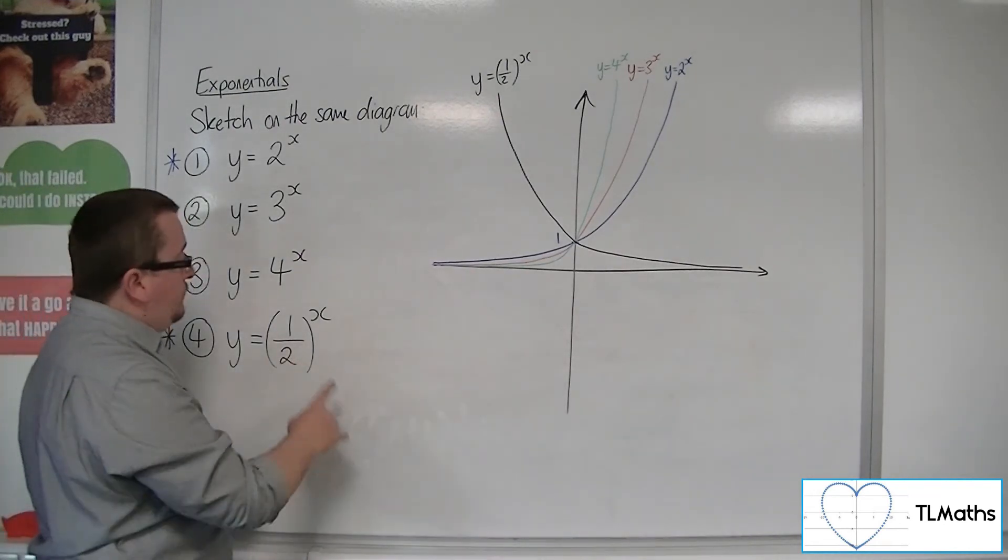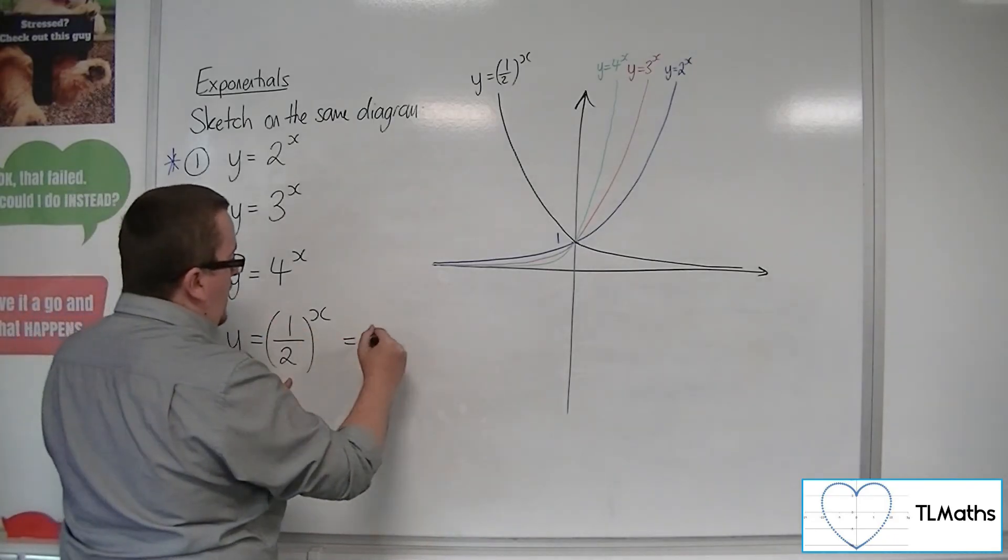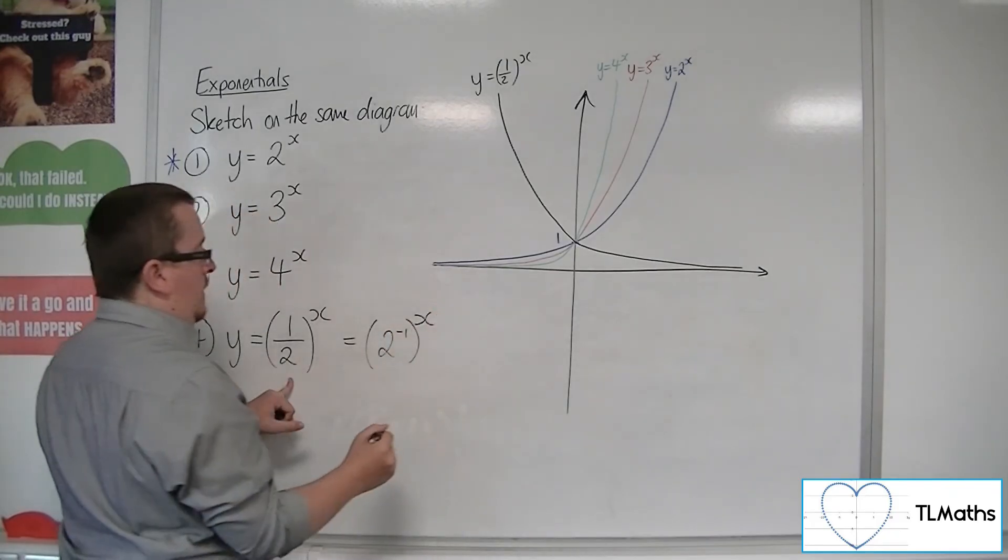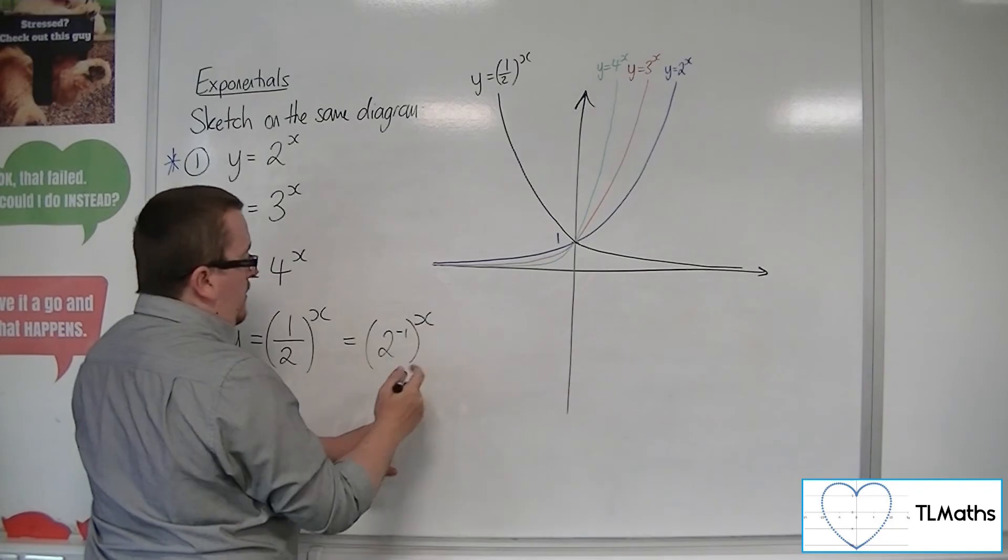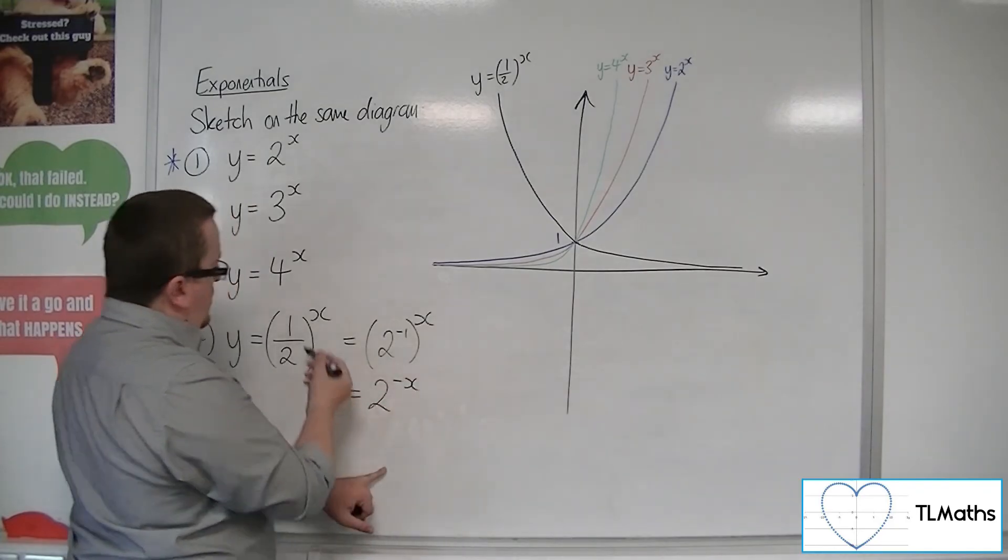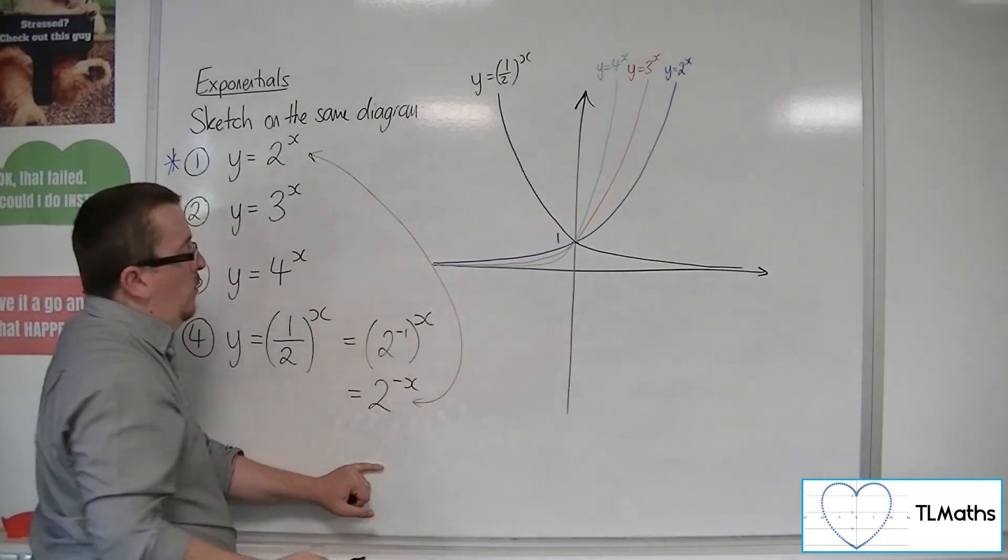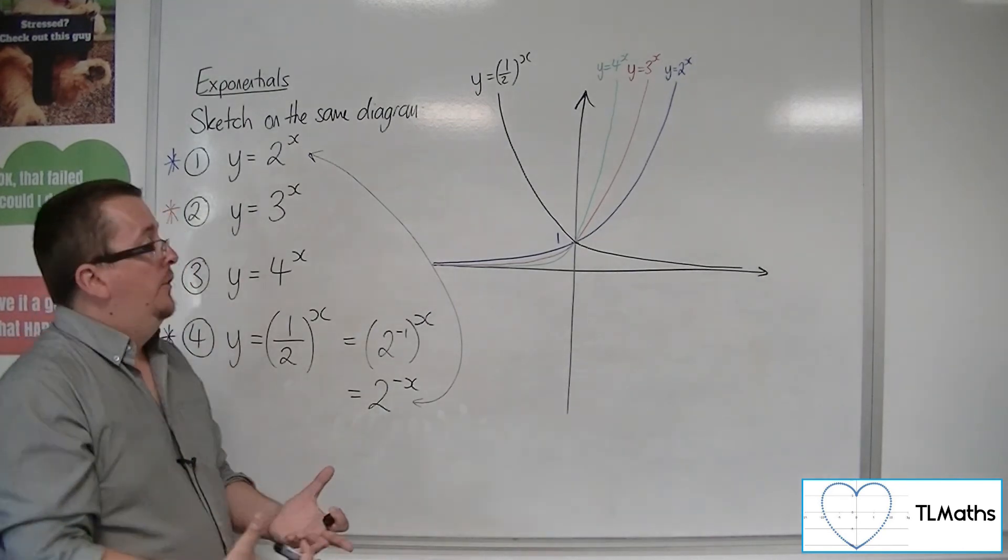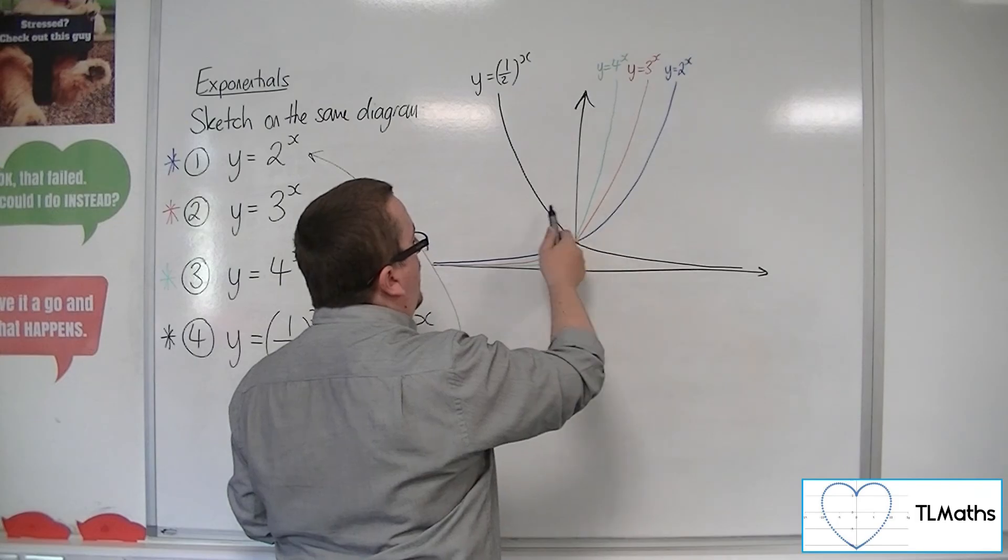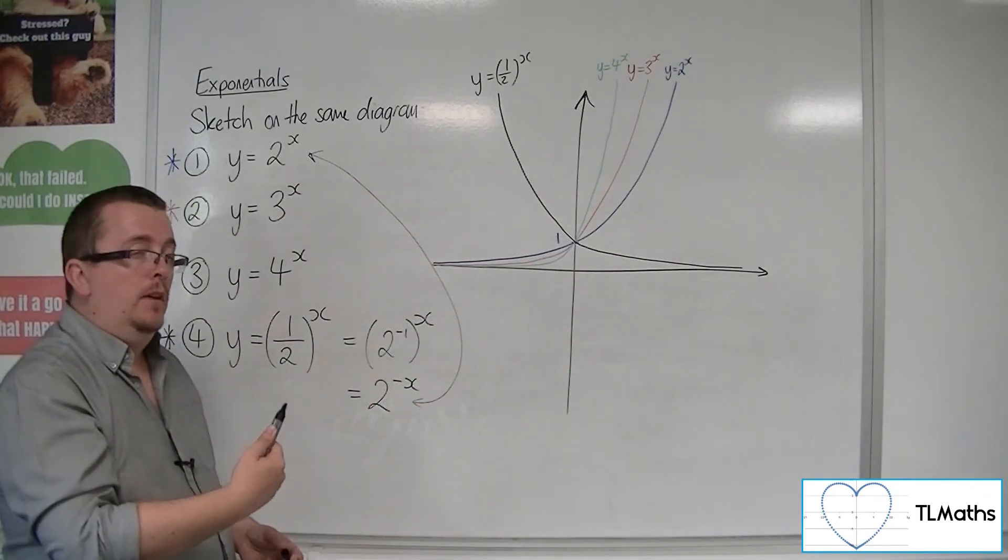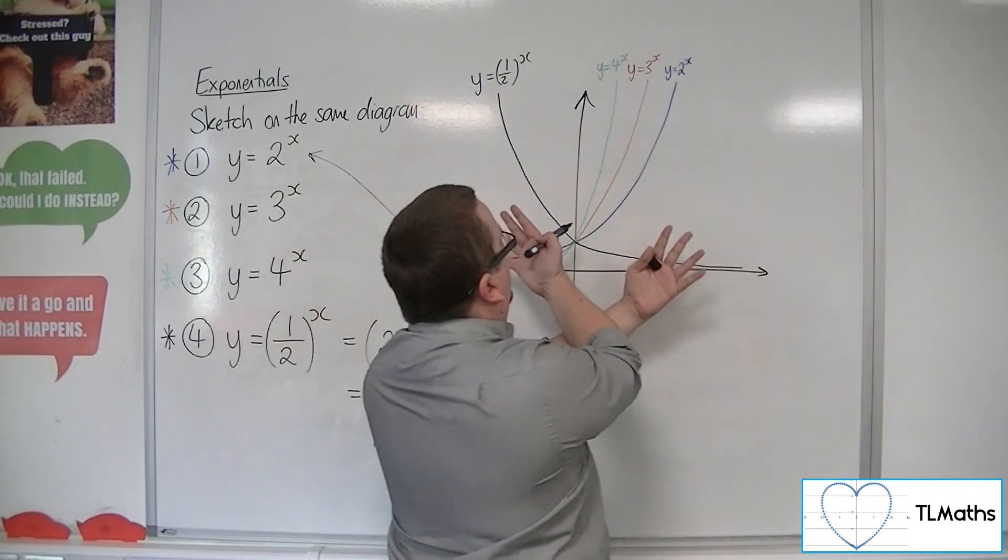So how can we get to that stage? Well, we can think about this as, well, 1/2, we know we can write as 2 to the minus 1. And now using our indices knowledge, you can rewrite this as 2 to the power of minus 1 times x, so 2 to the minus x. So 1/2 to the x is the same as 2 to the minus x. And if you compare these two, well, what's happened is that the x has been replaced with minus x. So where you originally had 1, 2, that has been swapped to minus 1, 2, because the x value has changed sign. So all of the x values of the 2 to the x curve have swapped, have changed sign, and that has caused this reflection.